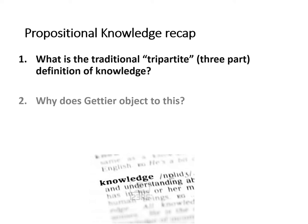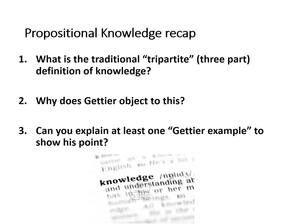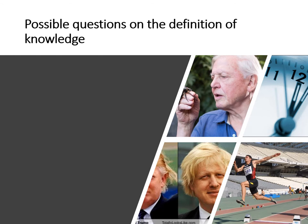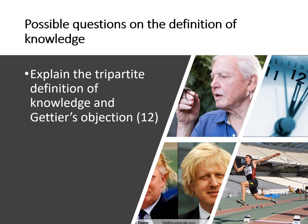What was Gettier's objection to this, and why was it so important? You need to be able to explain at least one Gettier-type case to show the point he was trying to make — it doesn't need to be his own examples. This is the sort of question you'd get on the definition of knowledge: explain the tripartite definition and Gettier's objection. It's a 12-mark question, often with two parts — explaining the tripartite definition, then explaining Gettier's objection to it.